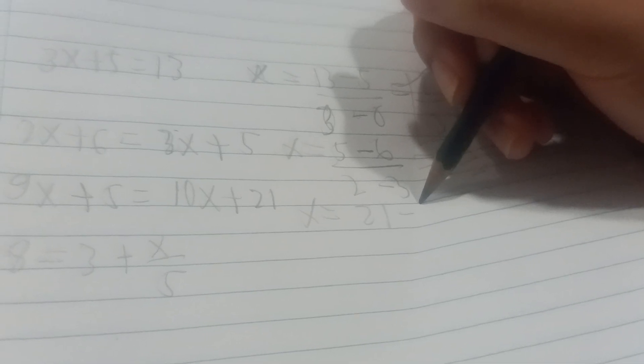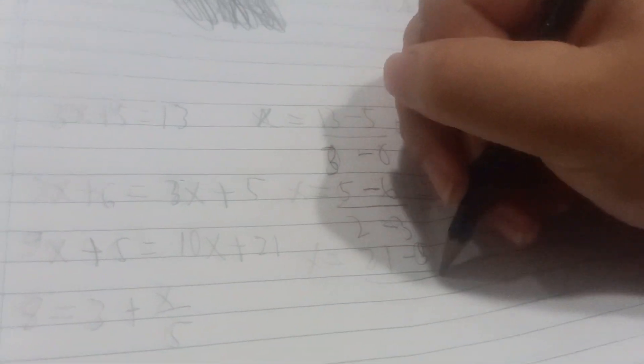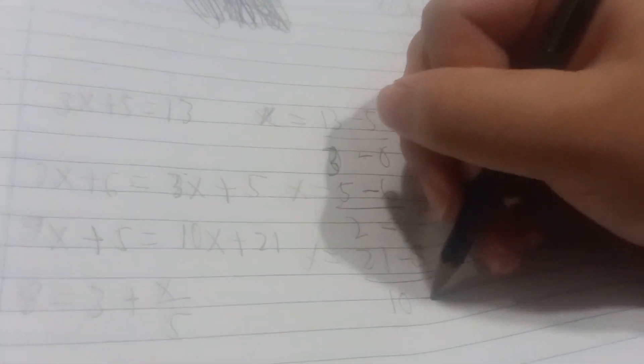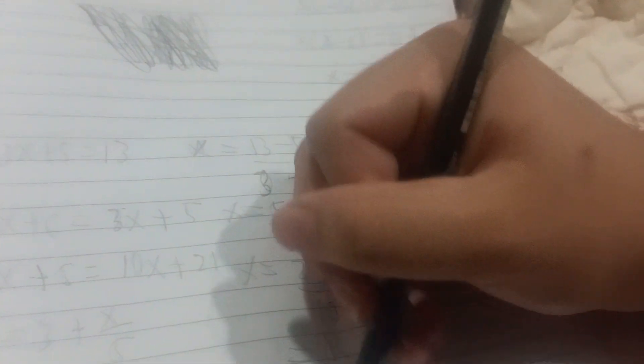Then you do the same for number three. It's 21 minus 5 all over 10 minus 9, which is just 16 over 1, which is 16.